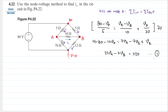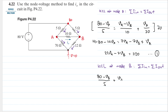Now let's do KCL at node B. The sum of the currents going in equals the sum of the currents going out. There are two currents going in: the first is 80 minus Vb divided by 5, and the second is Va minus Vb divided by 10. The current going out is Vb divided by 12.